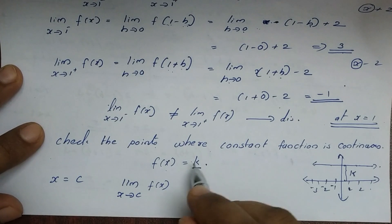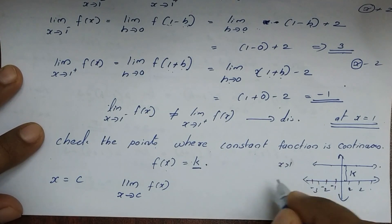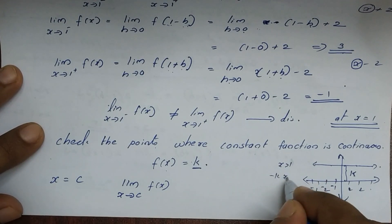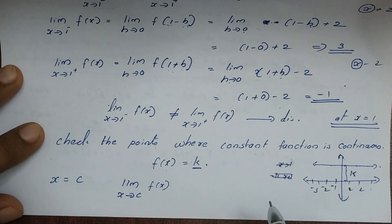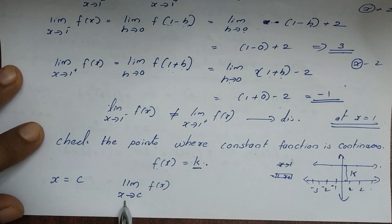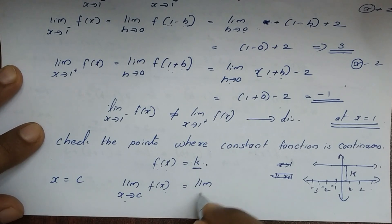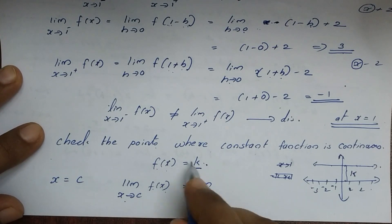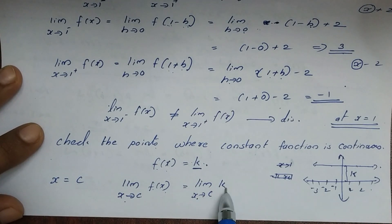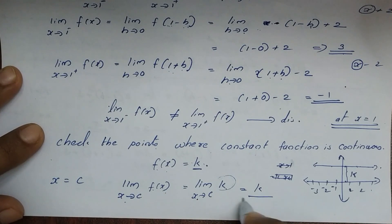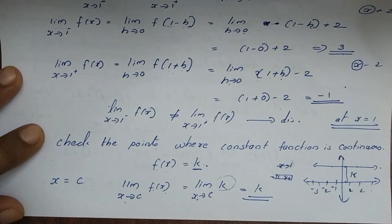At any point x = c, the constant function value is k. The left-hand limit as x tends to c of f(x) equals k, and the right-hand limit as x tends to c of f(x) also equals k. So k equals k — the limit equals the function value.